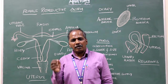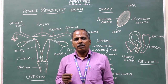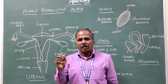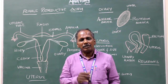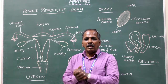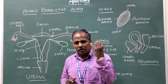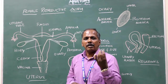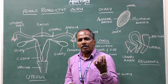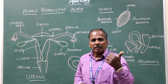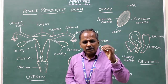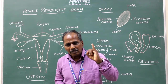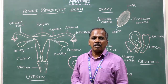Female reproductive system. The parts of the female reproductive system are divided into external parts and internal parts. The external parts include mons pubis, labia majora, labia minora, clitoris, and vestibule. In the vestibule, there are two orifices — that is, openings: number one, urethral orifice; number two, vaginal orifice.